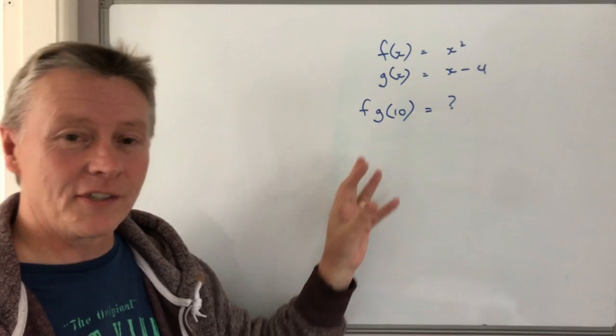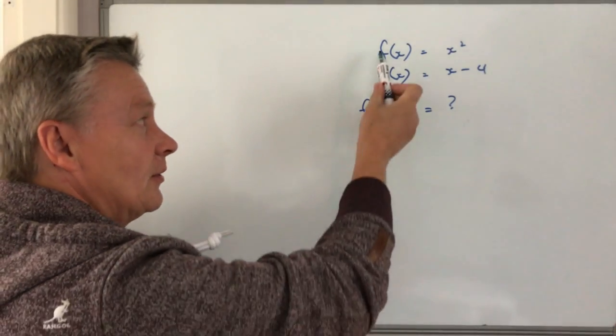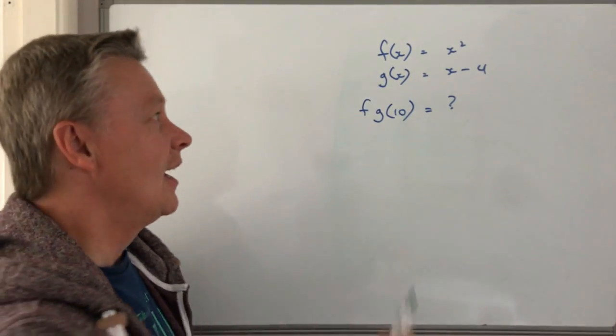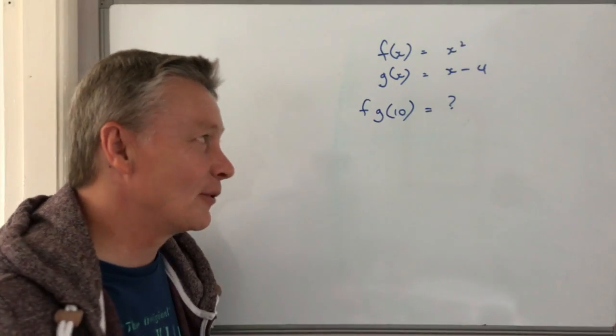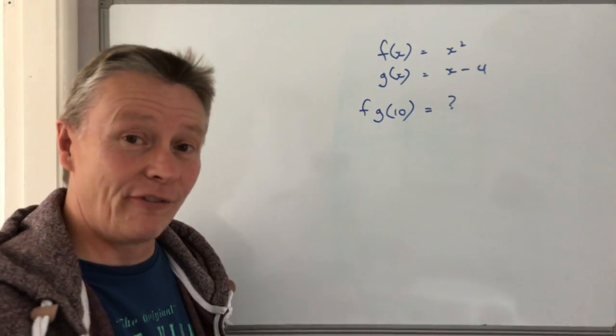Okay, so hopefully this will give you some idea of the kind of things that they're going to be asking you to do. The first thing is that you're given what's called the function f of x equals x squared and g of x equals x minus 4, and what you're asked to do is to put those two functions together.